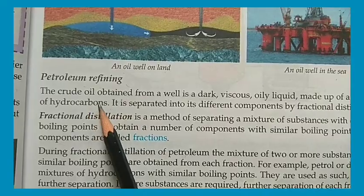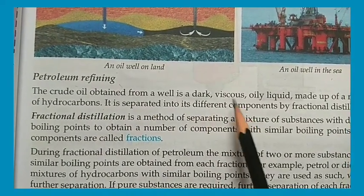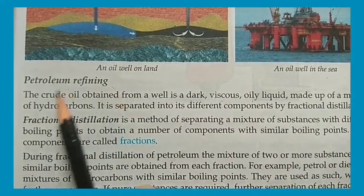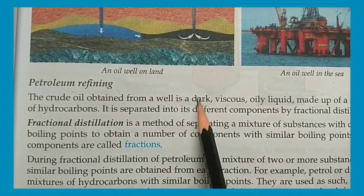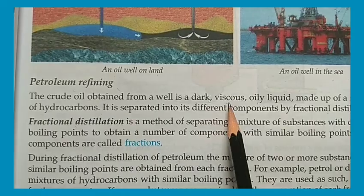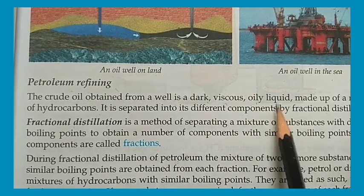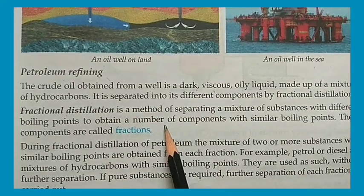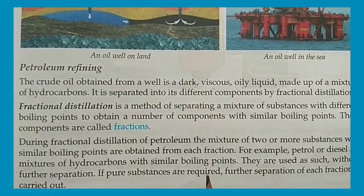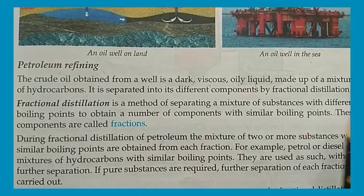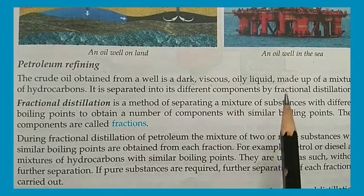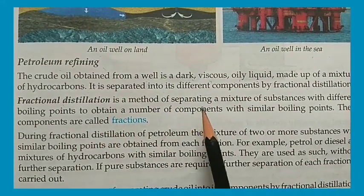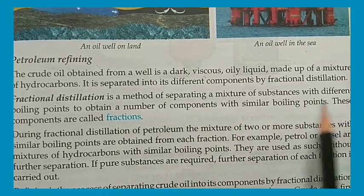The crude oil obtained from a well is a dark, viscous oily liquid made up of a mixture of hydrocarbons. It is separated into different compounds by fractional distillation. Fractional distillation is the method of separating a mixture of substances with different boiling points.